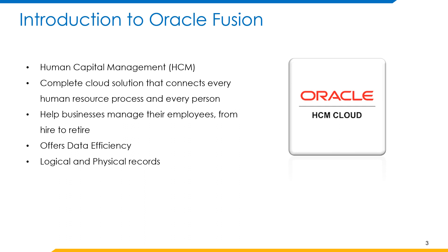It also offers data efficiency by preserving history of changes made due to the attributes of some objects. As a professional user, you can retrieve and edit past and future versions of an object. Many HCM objects including person names, assignments, benefit plans, grades, jobs, locations, and payrolls are data effective. Data effective objects include one or more physical records, each with effective start and end dates. One record is current and available to transactions; others are past or take effect in future. Together, these records constitute the logical record or object instance.